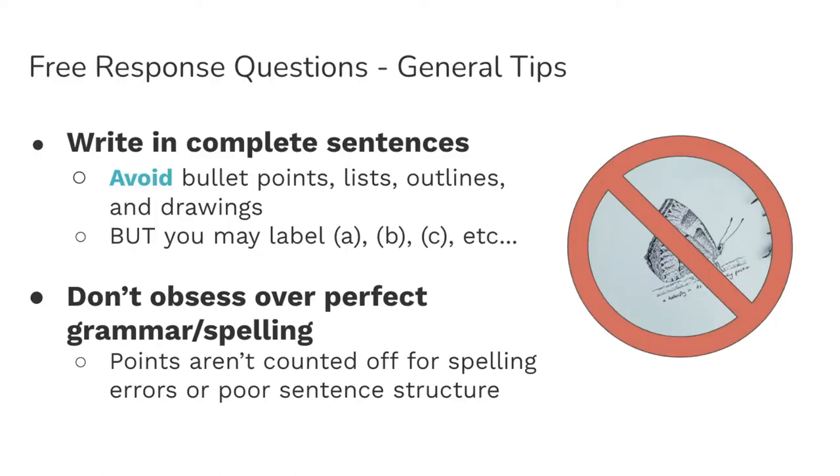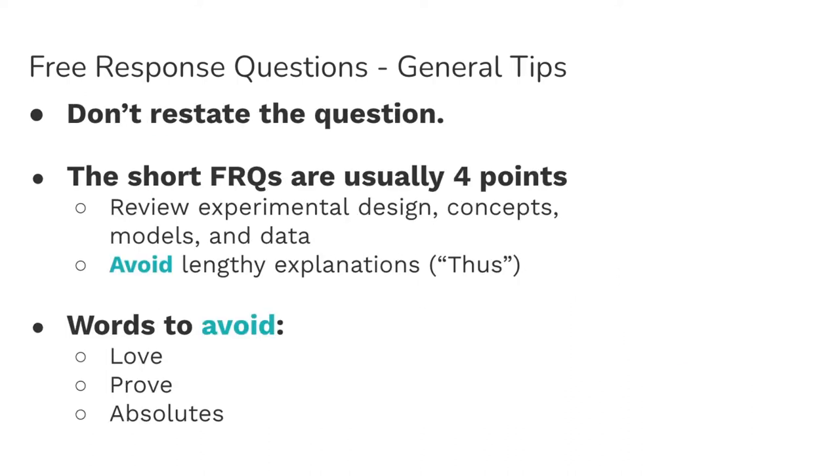Some general tips for the FRQs: always write in complete sentences. You should not have bullet point lists, outlines, or drawings unless it tells you to draw something on a specific template. You can label your responses with A, B, C, etc., so you don't have to write it all out in one large paragraph. You don't need to obsess over perfect spelling or grammar. Points are not counted off for errors or for sentence structure. But you don't need to write introductory or closing paragraphs, no thesis statements, and you're not going to get any special bonus points for good writing or topic sentences. Don't ramble. You can avoid restating the question. And remember that the short FRQs are usually four points each. You want to try to answer all of them, but they're worth about only half as much as the longer FRQs.